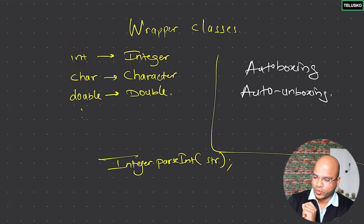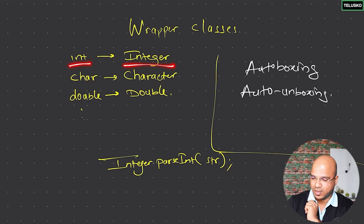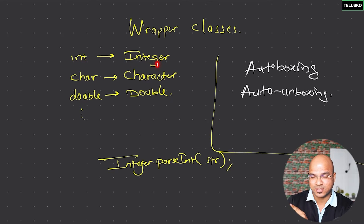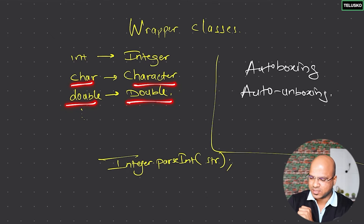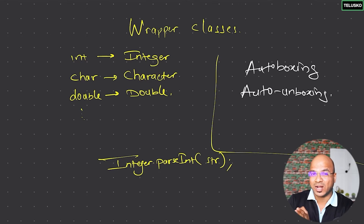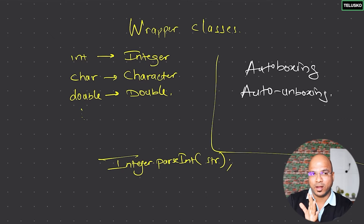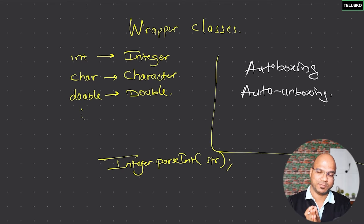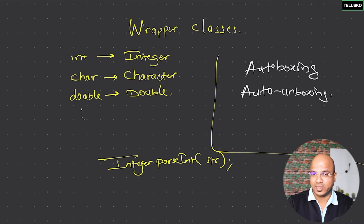In Java, we have the concept of wrapper classes. For every primitive type, we have a corresponding class. If you want to work with int, you can use Integer, which is a class that extends the Object class. For char, we have Character as a class. For double, we have Double as a class. We also have Short and Byte — for every primitive type, there is a wrapper class. This is useful when working with frameworks that only support objects.